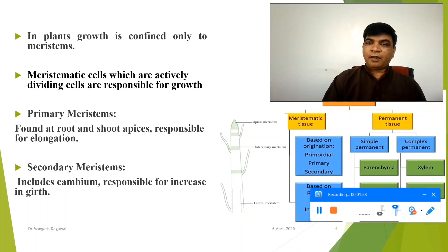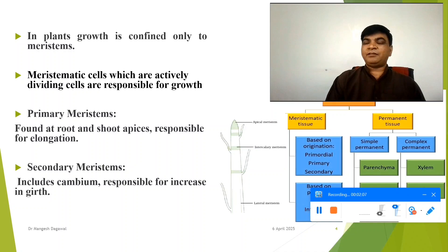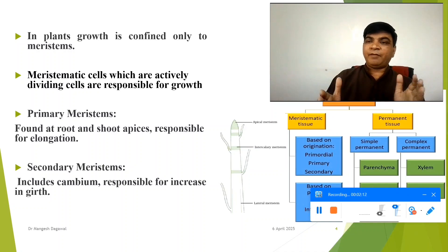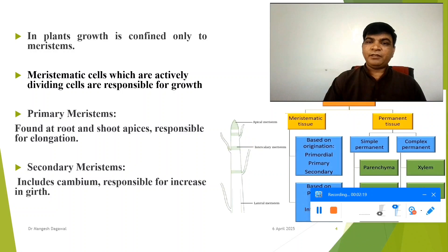At the same time, the secondary meristems — in the form of cambium — are responsible for the increase in the girth of the stem. When a stem undergoes secondary growth, the cambium plays a very important role in the increase in the girth of the stem.